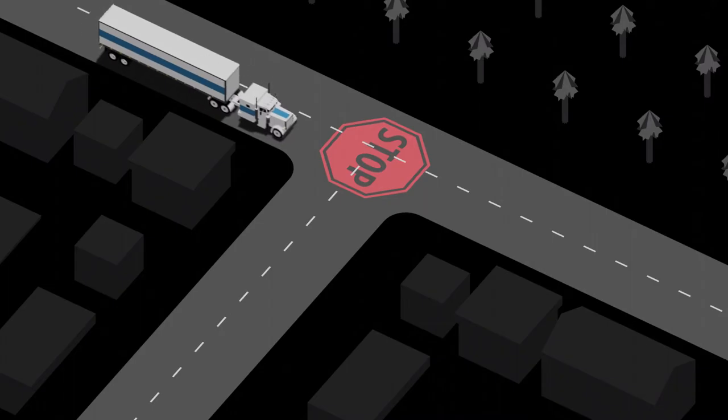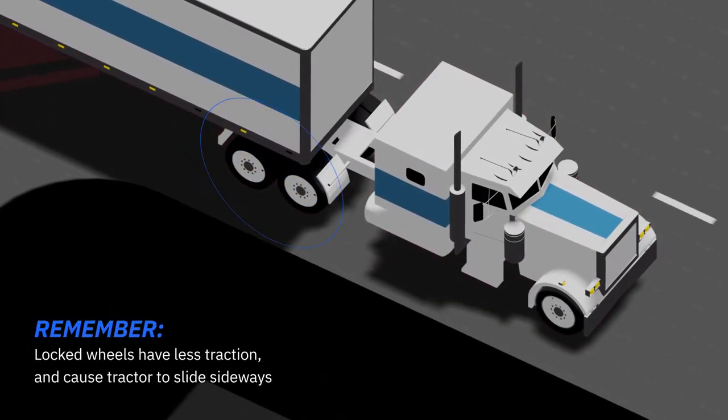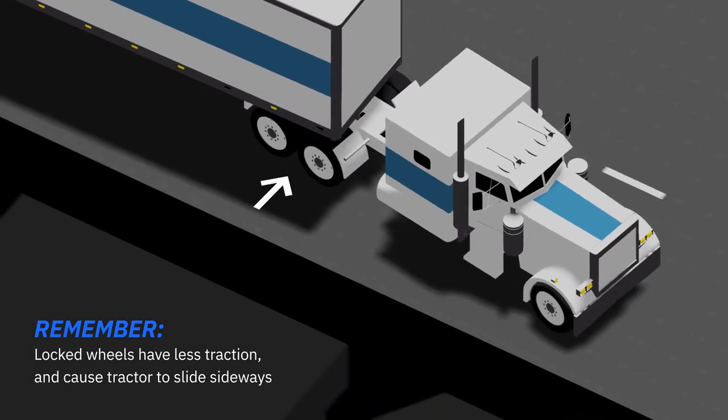Drive wheel braking skids occur when the rear drive wheels lock. Locked wheels have less traction than rolling wheels, and this will cause the tractor to slide sideways.